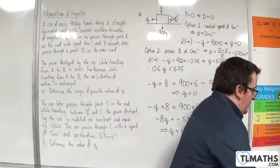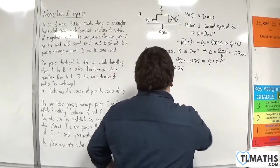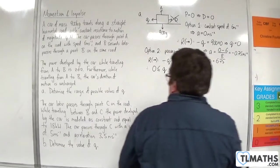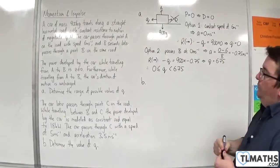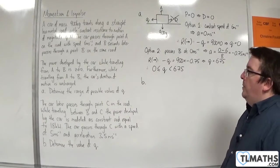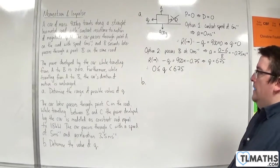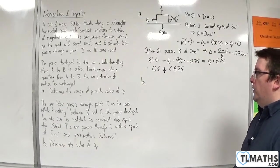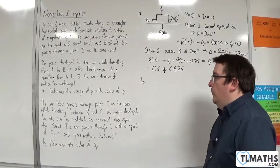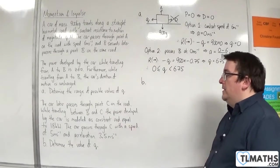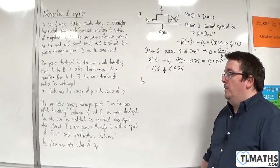That's an alternative way through. Now let's take a look at part B. The car later passes through point C on the road. While travelling between B and C, the power developed by the car is modelled as constant and equal to 18 kW. The car passes through C with a speed of 5 metres per second and acceleration of 3.5 metres per second squared. Determine the value of Q.